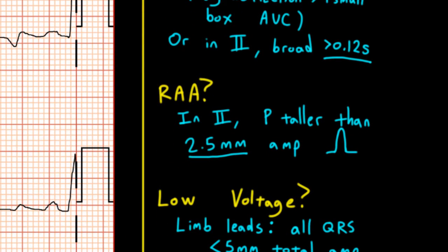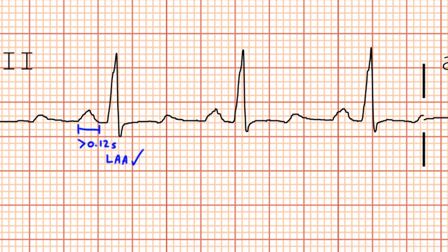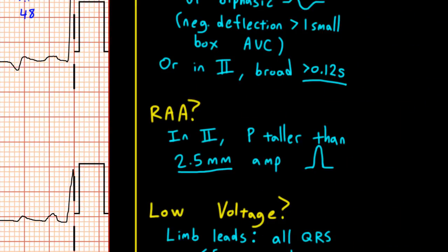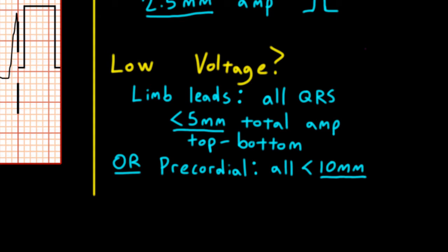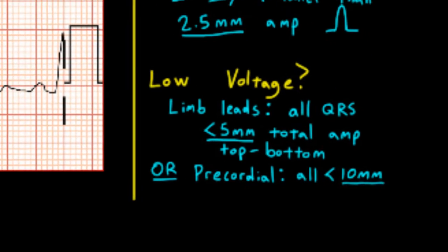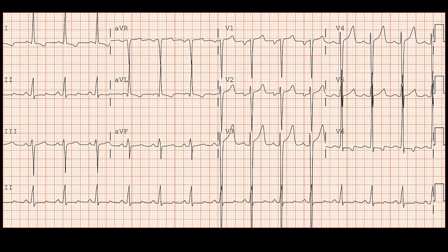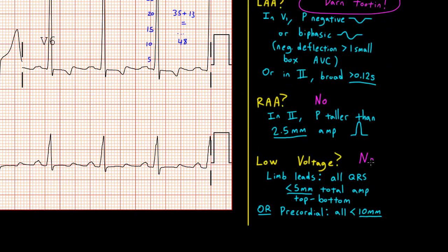Now let's look at right atrial abnormality. For right atrial abnormality, we look in lead 2 for a P-wave that's taller than 2.5 millimeters. Looking here in lead 2, this P-wave is not taller than 2.5 millimeters, so we don't have right atrial abnormality. Now finally, let's scan for signs of low voltage. We scan the limb leads for QRS complexes smaller than 5 mm from top to bottom, and the precordial leads for complexes smaller than 10 mm from top to bottom. Looking at both sets of leads, we have a ton of voltage here due to the patient's LVH — so we don't meet criteria for low voltage.